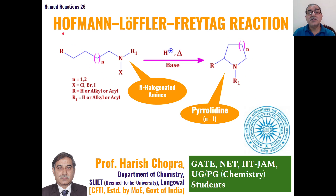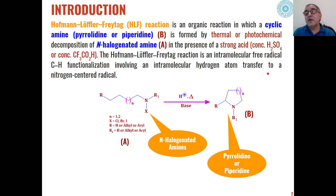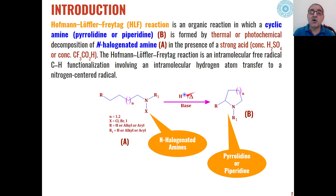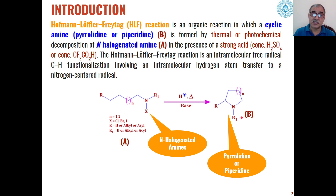This reaction is also commonly known as the HLF reaction. Basically, this reaction is when N-halogenated amines are reacted under strongly acidic conditions, under thermal conditions, or even photochemically, they are converted into pyrrolidines or piperidines through cyclization reactions.